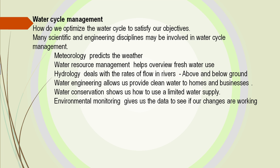We study water in many different ways. Meteorology predicts the weather. Water resource management allows us to look at how we use our freshwater. Hydrology looks at the rate of flow of rivers and how we change that flow — we notice more and more we're getting rid of dams. Water engineering allows us to provide clean water. Water conservation shows us that all we have is limited water, and that limited water needs to be managed.